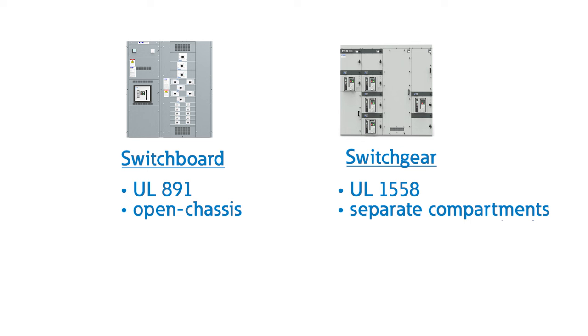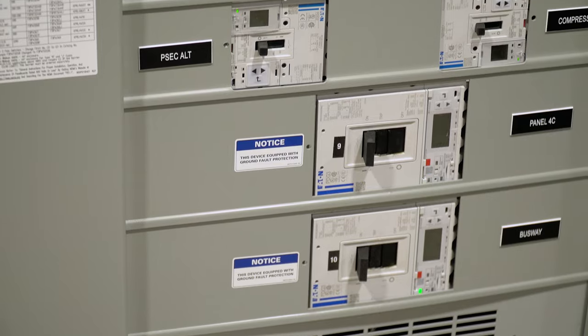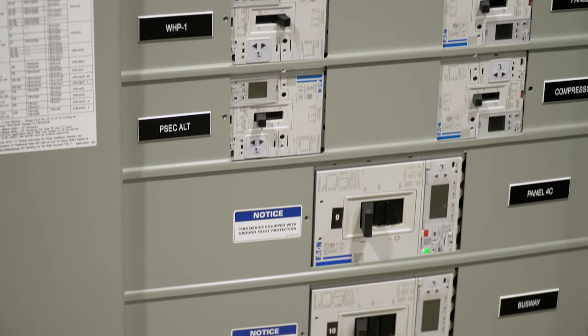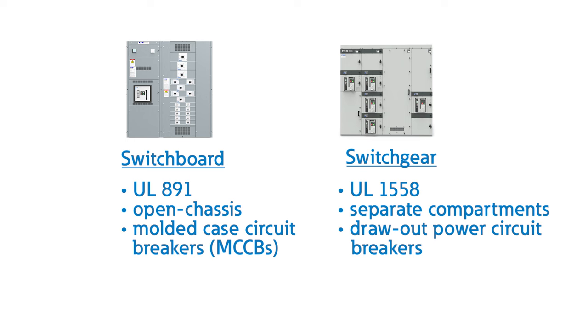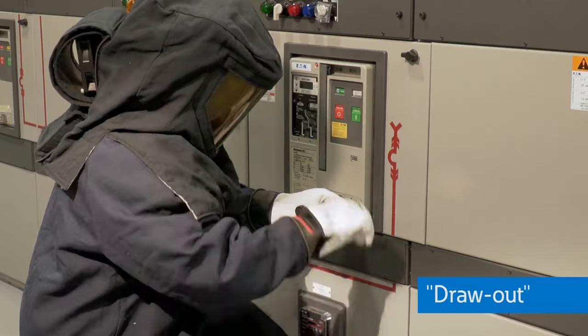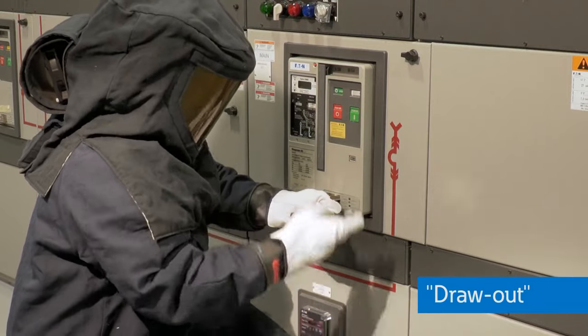Another visual difference is the type of breakers used. Switchboards will typically use fixed-mounted, molded case circuit breakers, or MCCBs, that fall under UL489. Since MCCBs can't be serviced, the entire enclosure must be de-energized before replacement of existing breakers or the addition of new breakers. On the other hand, switchgear will have draw-out power circuit breakers that can be removed and maintained without fully interrupting a power system.